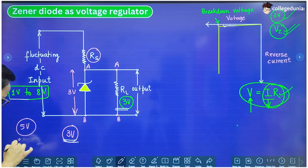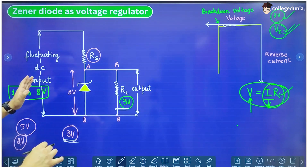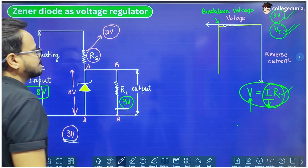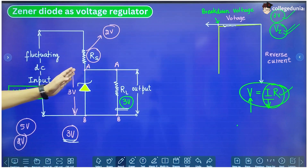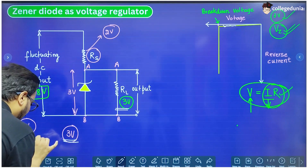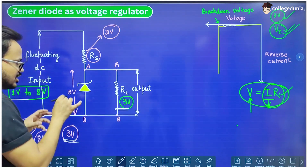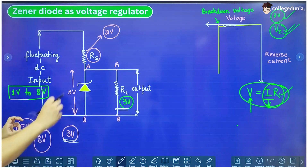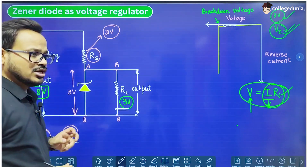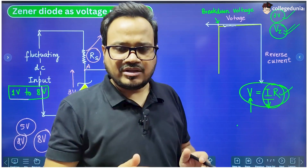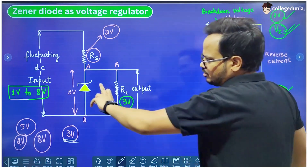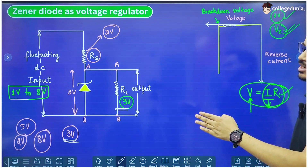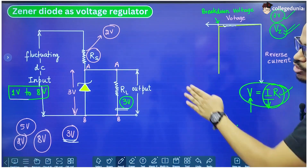What about the other 2 volt? Since the input is 5 volt, that's why we have a resistance here — the other 2 volt will be dropped across this resistance RS. For example, if it becomes 8 volt, then again the voltage across the Zener diode will remain 3 volt and the other 5 volt will be dropped across this resistor. So we can see that once the breakdown value is reached, the voltage across the Zener diode is not going to change — and we are using that property to keep the voltage constant across the output.